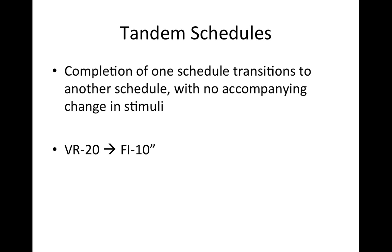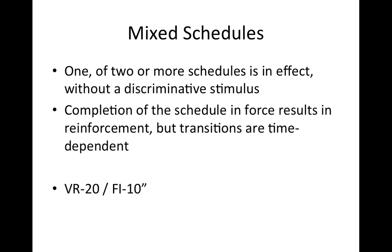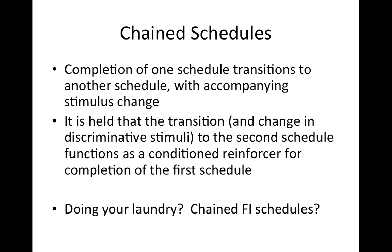Tandem schedules involve completion of one schedule transitioning to another with no accompanying change in stimuli — for example, a VR-20 tandem FI-10. Tandem and mixed schedules are often used as control procedures in experiments. Mixed schedules involve two or more schedules in effect without a discriminative stimulus, where completion results in reinforcement but transitions are time-dependent — for example, a VR-20, FI-10 mixed schedule. Chain schedules, though, are really interesting and have application to the real world.